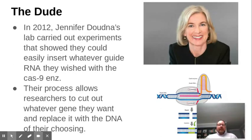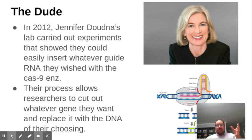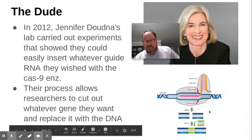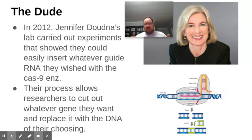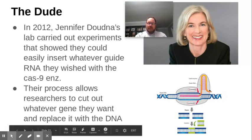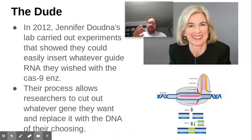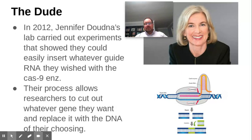In 2012, Jennifer Doudna - whose lab showed that you could put whatever RNA you want into the guide RNA - demonstrated that this system could recognize any DNA sequence you choose and cut DNA wherever you want. With CRISPR-Cas9, you can insert whatever guide RNA you want, add it to the CAS protein, go cut DNA wherever you're interested, and then insert a therapeutic gene directly into the DNA. This is absolutely remarkable.